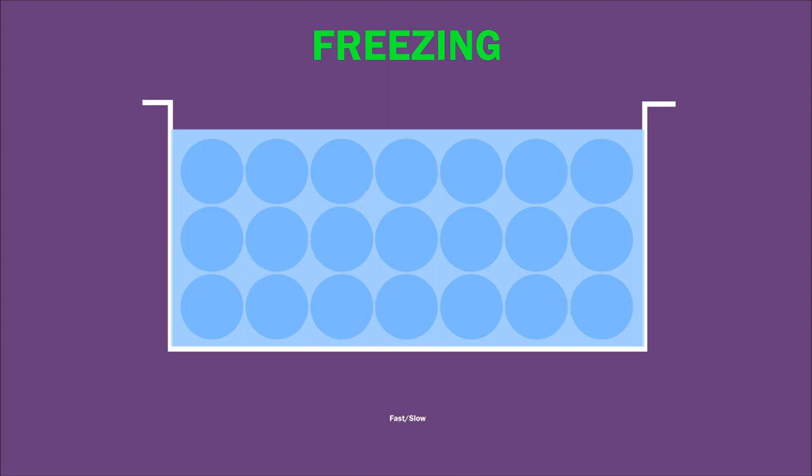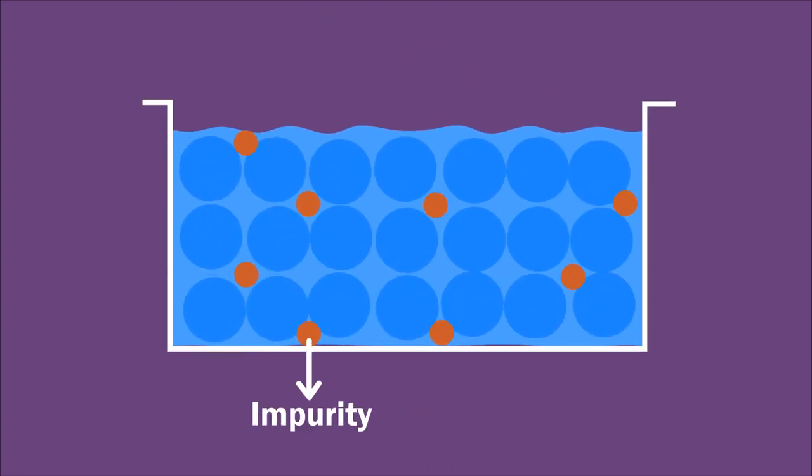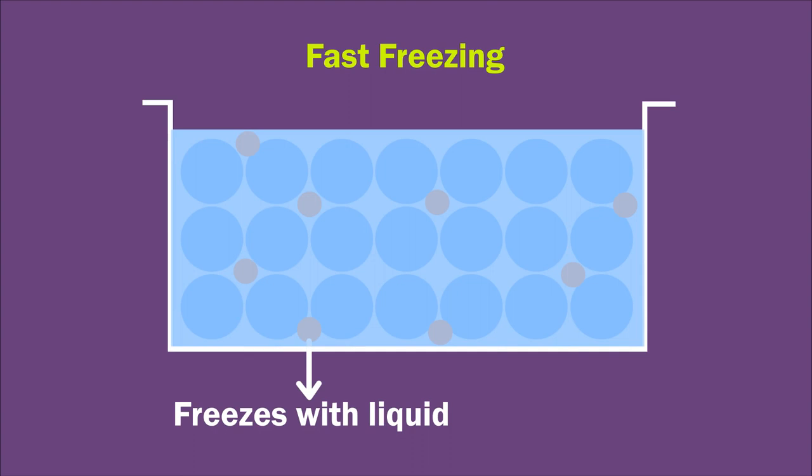Freezing can be done very fast or very slow. If there is any impurity in the liquid, with fast freezing they all will freeze in between liquid particles.